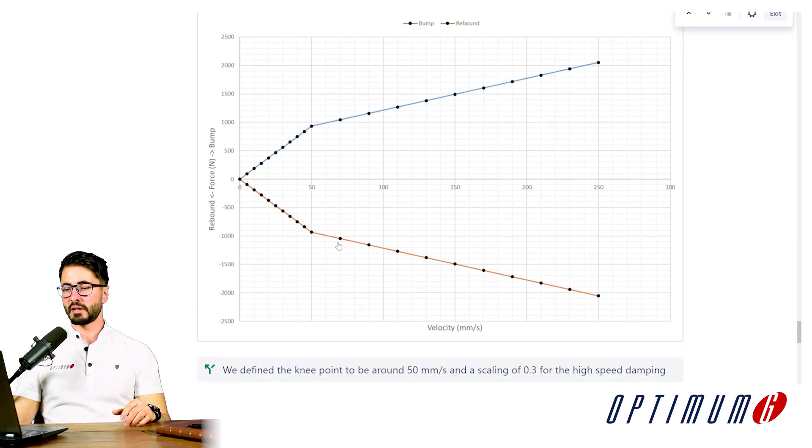So for this design, we are going to define after looking at, for example, data from a previous generation, I will say that the knee point that I want for this damper is around 50 millimeters per second over here, while I would like a scaling factor of 0.3 of damping for high speed.